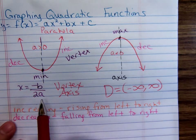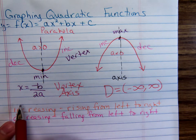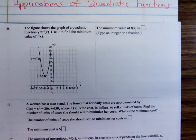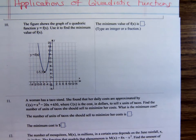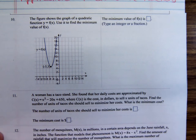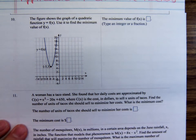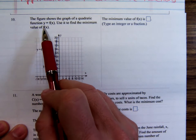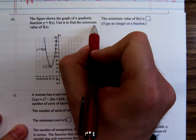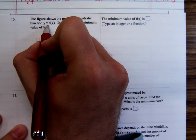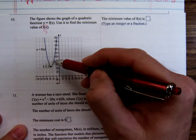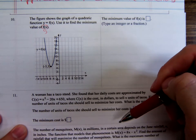What we're going to be doing now is looking at some word problems. Problem number 10 is not a word problem, but it's setting the stage. It says, here's a graph of a quadratic function, use it to find the minimum value of f(x). Minimum means smallest, and f(x) is the same thing as y.